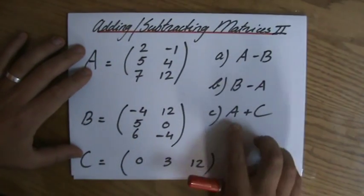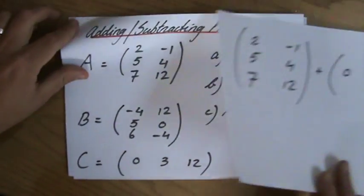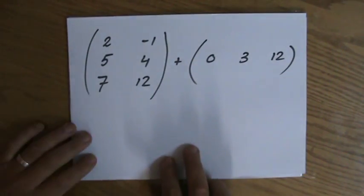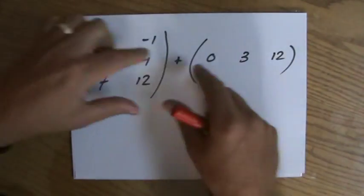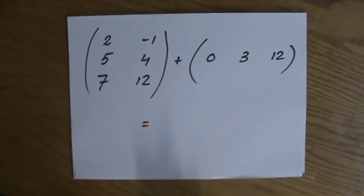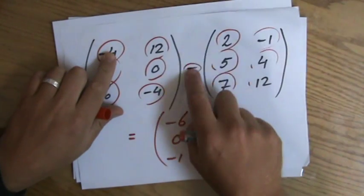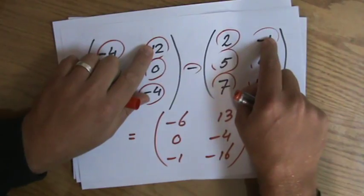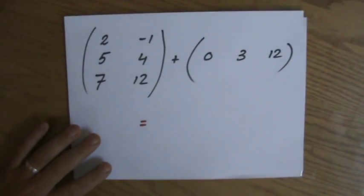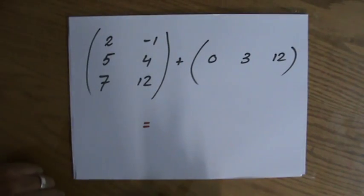The last question: what is matrix A plus matrix C? Again, I copied those two matrices on a different piece of paper—A and C. And then you realize, oh hang on a minute. Like over here, I could easily say minus 4 minus 2, 12 minus minus 1, but what are the positions here that I should add with each other?